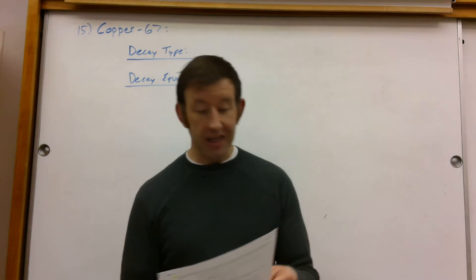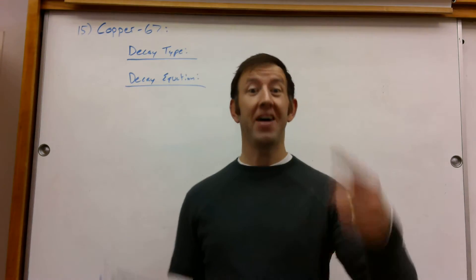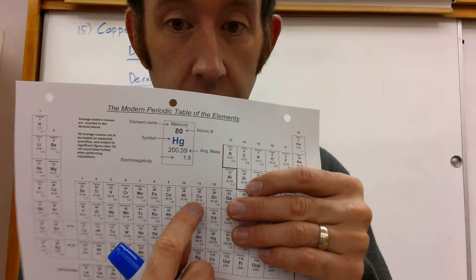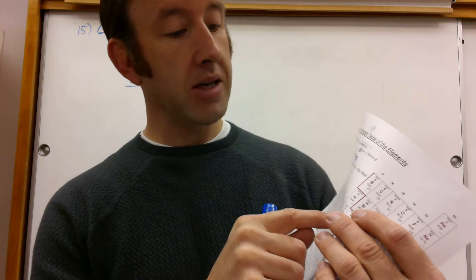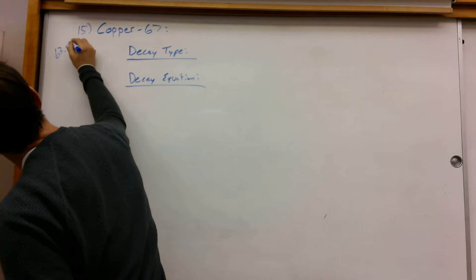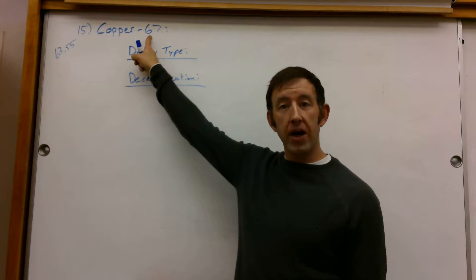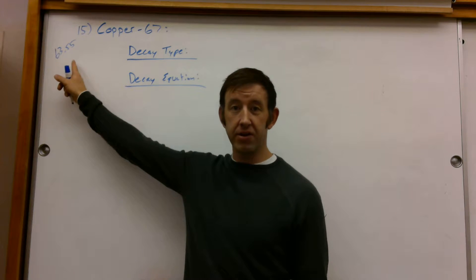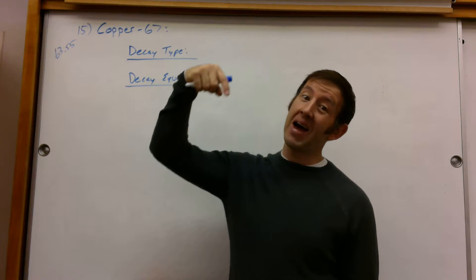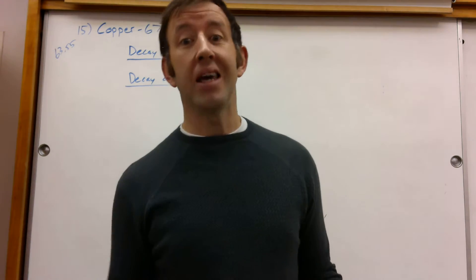On to number 15 now, which is copper-67. We're going to use the same type of logic. I'm going to find copper on my periodic table. The average mass of copper is 63.55. This copper isotope has a mass that's considerably higher than that average. Like last time where I had a lower mass and didn't have enough neutrons — if my mass is considerably higher, that tells me: too many neutrons.